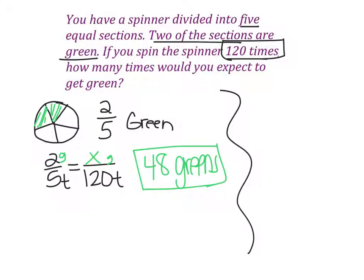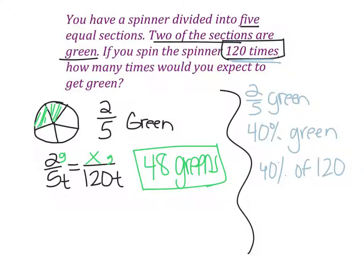Another method that we could use is we could turn it into a percent. If we have two-fifths green, which we already figured out, we could write that as a percentage. Top divided by bottom times 100. So two divided by five times 100 is 40%. So we have a 40% chance of spinning green. And we're spinning it 120 times. So we're trying to find 40% of 120. Now you can set up a proportion or you could just do multiplication. But 40% is written as a decimal .4 of means multiply. So 40% of 120 is .4 times 120. And just to confirm when I do that, I do get 48. So another way to get to that same answer that you're going to have 48 greens.